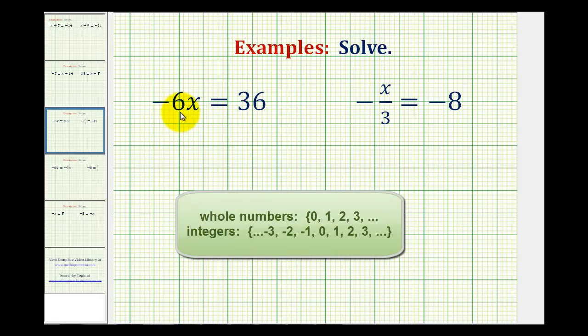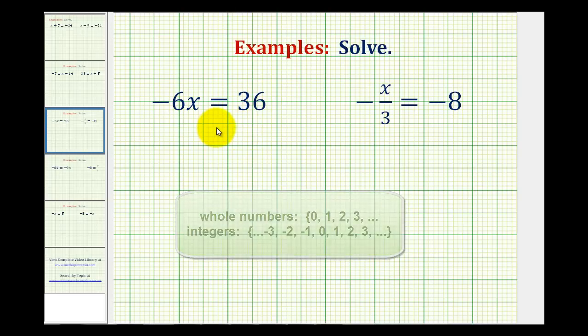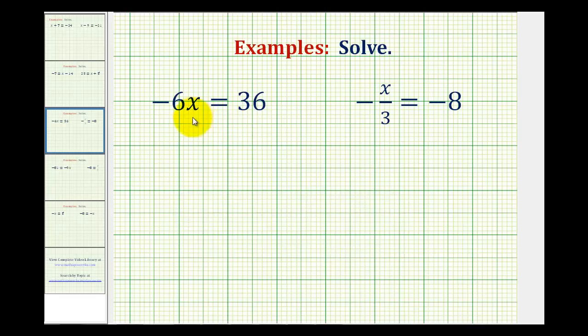So looking at our first example, we have negative 6x equals 36. And the goal of any linear equation is to isolate the variable on one side of the equation. So we want to manipulate this equation so that it's in the form of x equals some number on the right side.